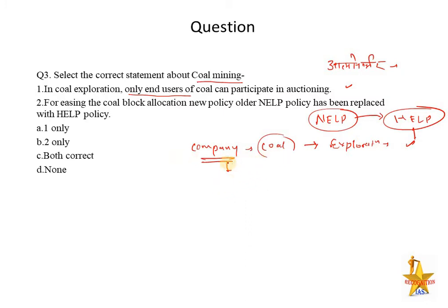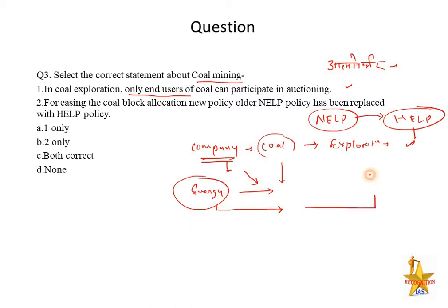However, many companies are not direct end users of coal but still need it — for example, an energy company that needs coal for manufacturing. Such a company was earlier dependent on waiting for a direct end-user company to get a license. Now, after the Atma Nirbhar scheme — the ₹20 lakh crore package — any company, whether directly or indirectly involved, can participate in coal exploration auctioning.